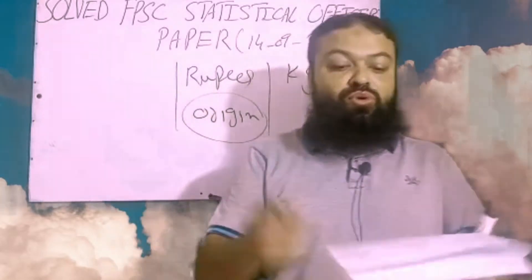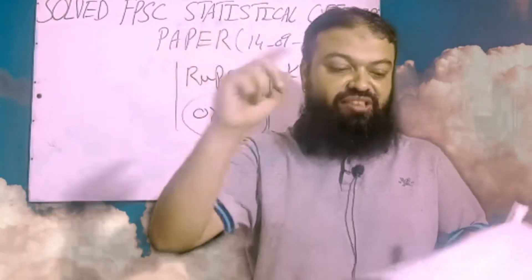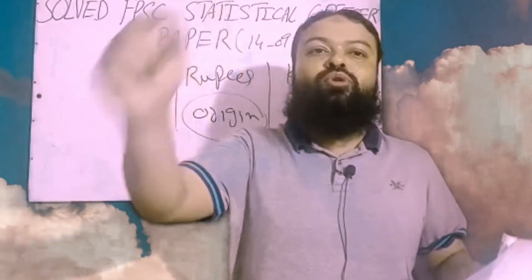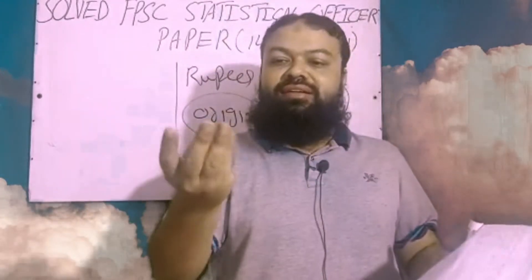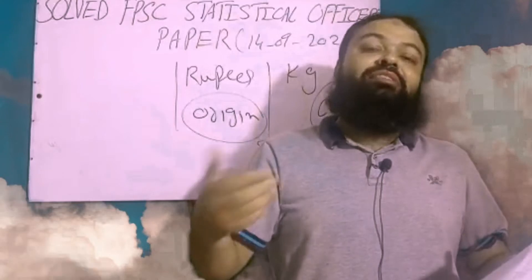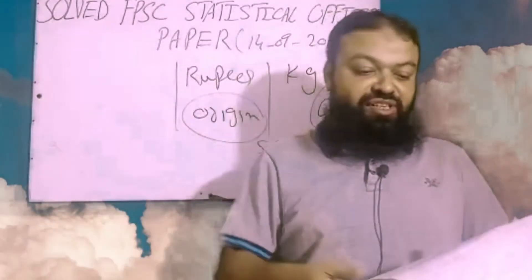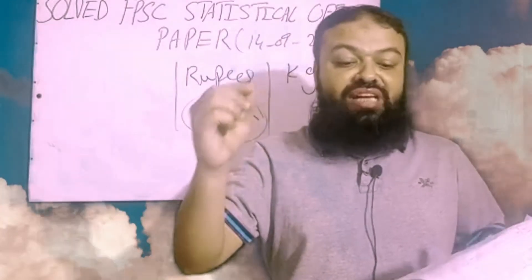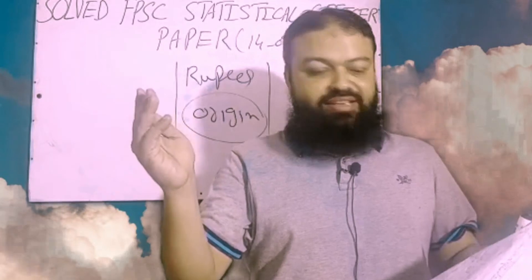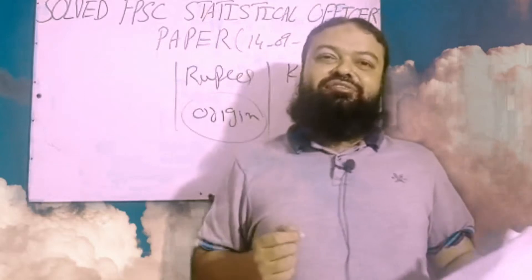Question number nine: the most frequent value of the data set is called mode — that is the correct option. The most repeated or most frequent value is mode. For example, if you have colors red, green, yellow, and pink, and pink is repeated most often, then the mode is pink. Question number ten: in the case of shoe sizes of children — size 5, 6, 7, 8 — which is the best measure? Mode is the best one.